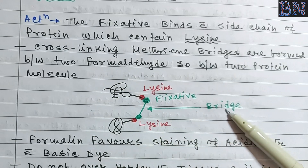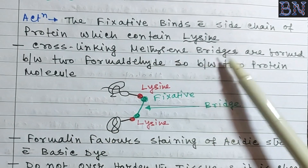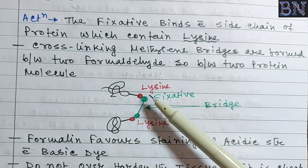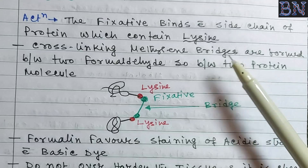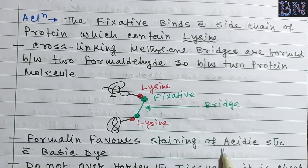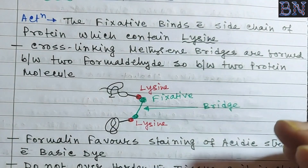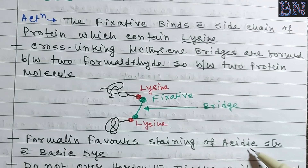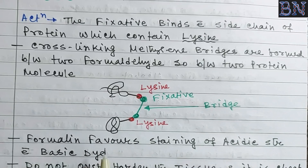Cross-linking occurs when methylene bridges are formed between two formaldehyde molecules and the protein molecules. This is very important. The bridge formed is a methylene bridge between the protein molecules. Formaldehyde also enhances staining of the acidic structure with basic dye. It is a good fixative that does not over-harden the tissue.